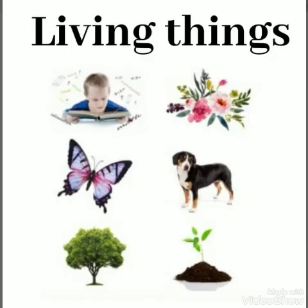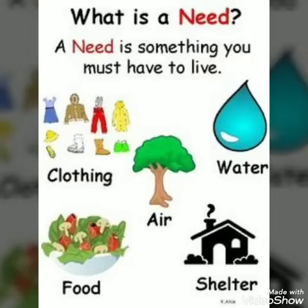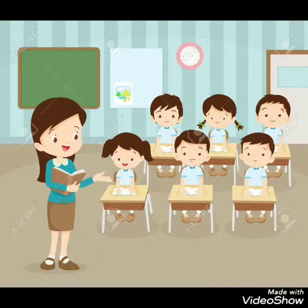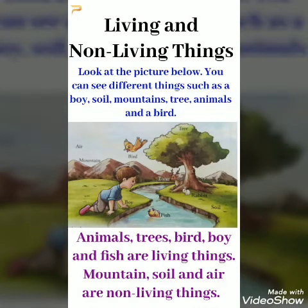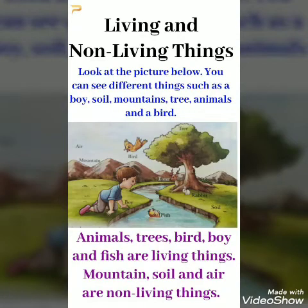Other living things are animals and they need food, water, space and shelter. Look at the picture below. You can see different things such as a boy, soil, mountains, tree, animals and a bird. Animals, trees, bird, boy and fish are living things. Mountain, soil and air are non-living things.